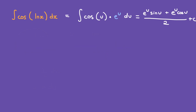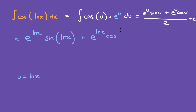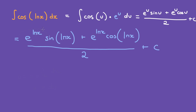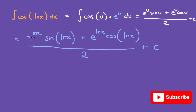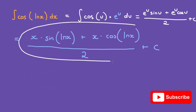Remember, at the beginning of the video we said that u is equal to ln of x, so change the u back to ln of x. We have e to the power of ln of x times sine of ln of x, plus e to the power of ln of x times cosine of ln of x, over 2, plus c. And e to the power of ln of x is simply x — same thing here. And that's it — this is the answer to that integral.